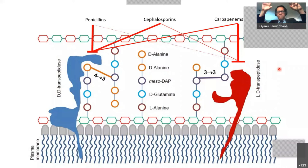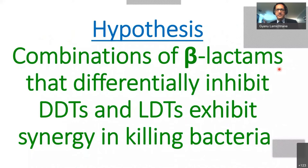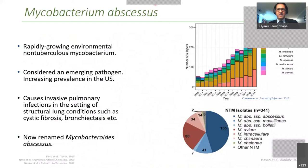So we have two enzyme classes and beta-lactams with differential inhibitory potencies against each. We asked a simple hypothesis: can we combine beta-lactams — combinations that differentially inhibit LD transpeptidases and DD transpeptidases — to optimally inhibit both and exhibit synergy in killing bacteria? For that, we switched to Mycobacterium abscessus — a rapidly growing environmental mycobacterium and an emerging pathogen. By the time we were doing this translational work around 2015, Mycobacterium abscessus incidence in the U.S. was greater than tuberculosis.